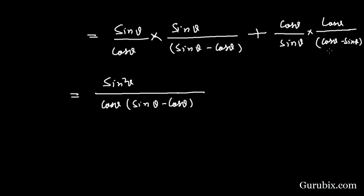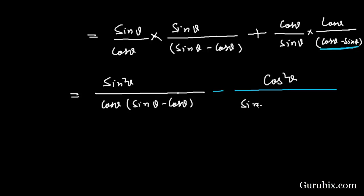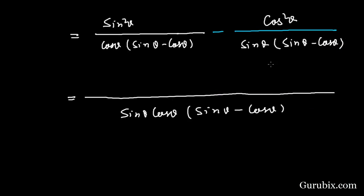We take minus common from the two terms, changing the sign. Then cos θ times cos θ gives cos squared θ. Combining over a common denominator of sin θ·cos θ·(sin θ minus cos θ), the numerator becomes sin squared θ minus cos squared θ... leading to sin cubed θ minus cos cubed θ in the numerator.